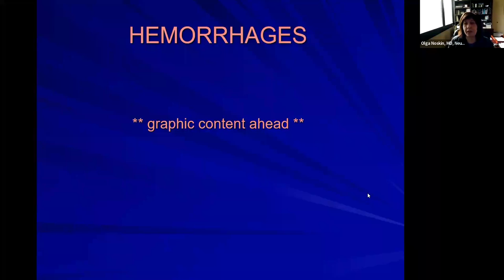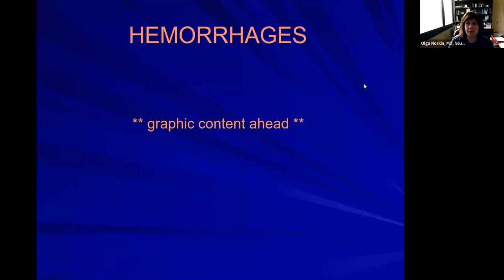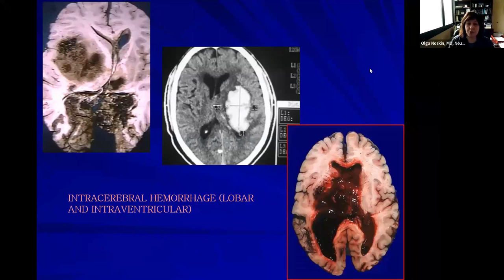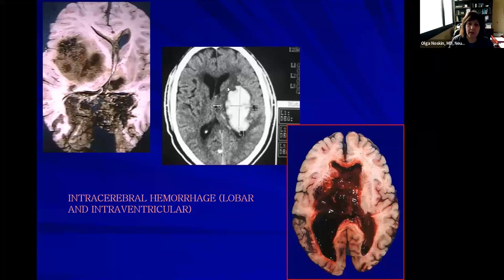Now, hemorrhages are not as frequent or as common, but I still want to discuss them and show some pictures. Here is what intracerebral hemorrhage would look like on a CAT scan — just a slice through our brain. This white blob is a hemorrhage. There are also actual brain autopsy samples from a different patient showing something similar.